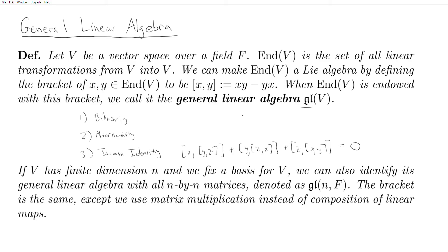Any subalgebra of the general linear algebra is called a linear Lie algebra. It's wise to verify the axioms. Bilinearity is pretty much immediately obvious from this definition — if you plug in X plus Z bracketed with Y, you'll see it works out, so I'll leave that to the viewer. Alternativity is obvious as well: [X, X] is clearly X times X minus X times X, which is zero. The Jacobi identity is a little less obvious, but if you expand the definition out you'll see it equals zero.